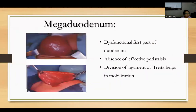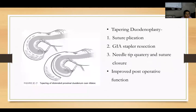For megaduodenum, the first part of the duodenum is dysfunctional with absence of effective peristalsis. Division of the ligament of Treitz aids mobilization. Tapering duodenoplasty is performed, which can be done by suture plication, GIA stapler resection, or suture closure, and has improved postoperative outcomes.